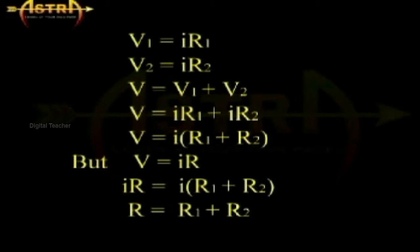Let a single resistance R be replaced in the series combination of R1 and R2 such that the same current I exists in the single resistance R.